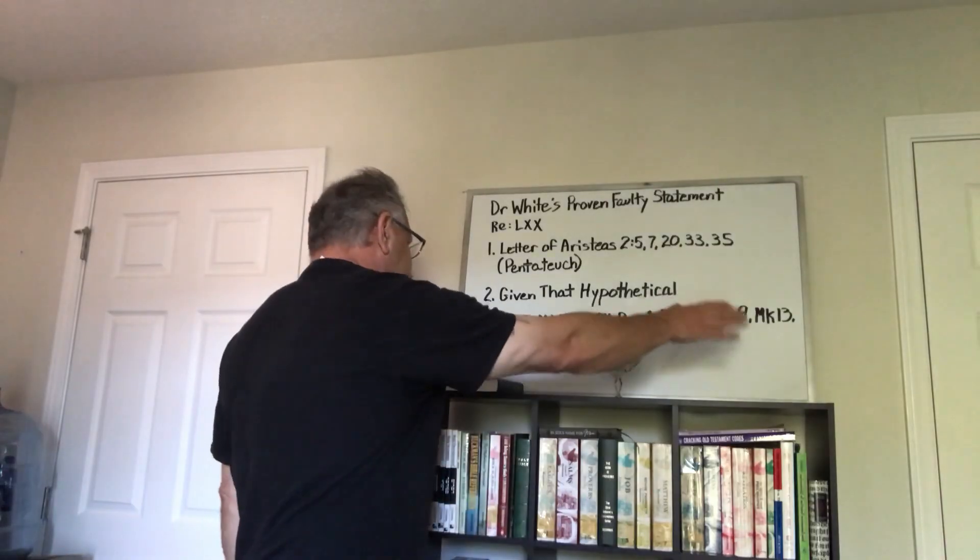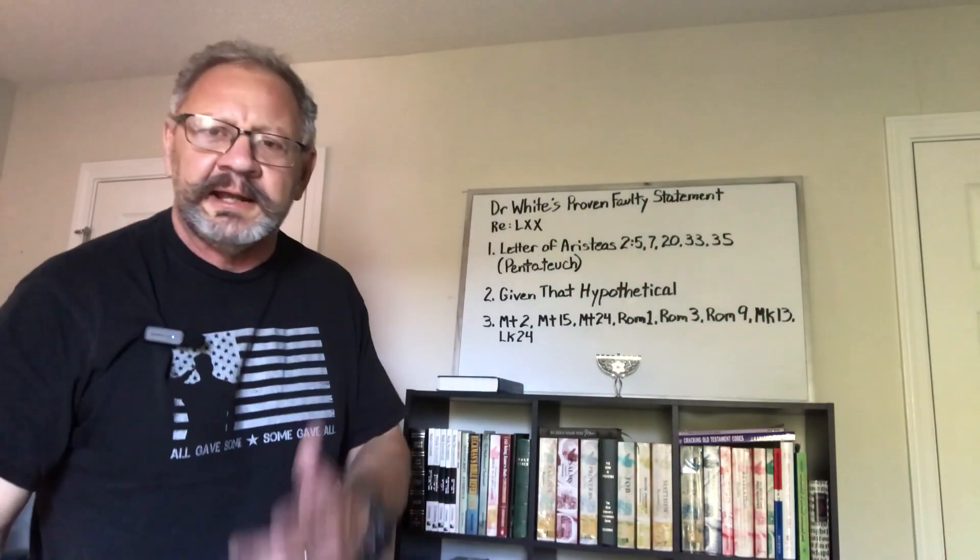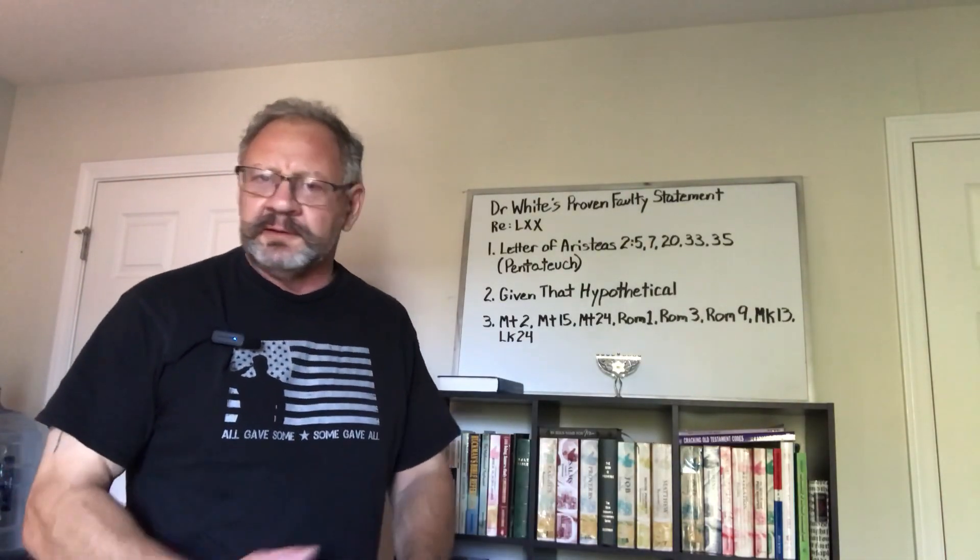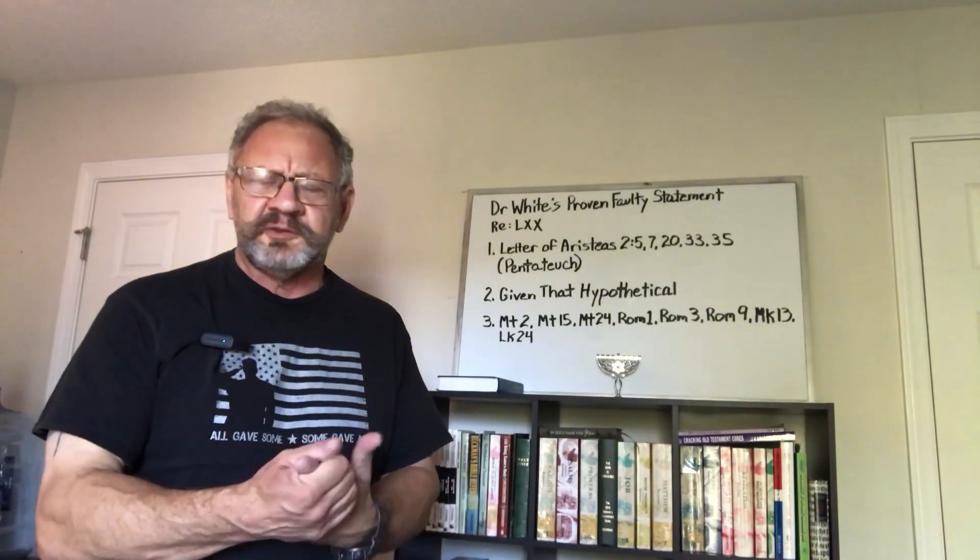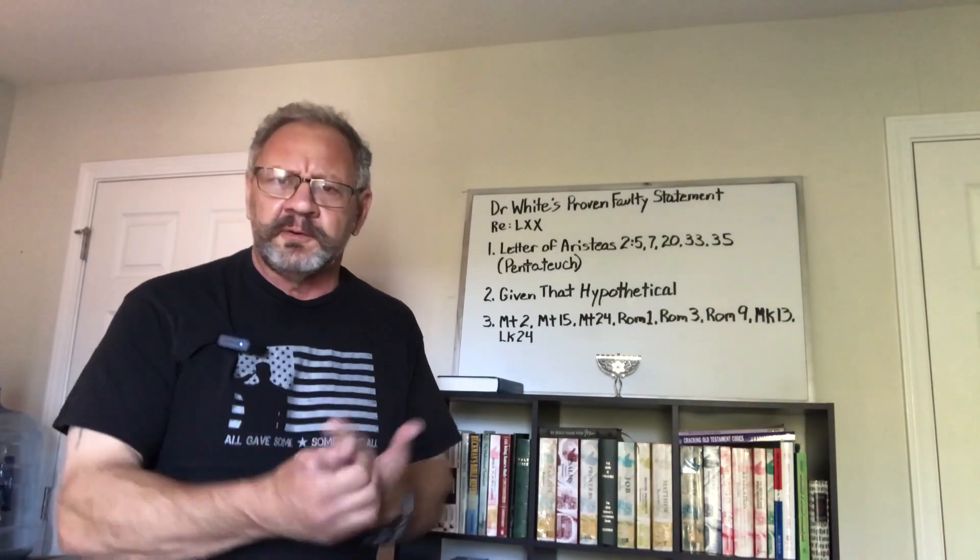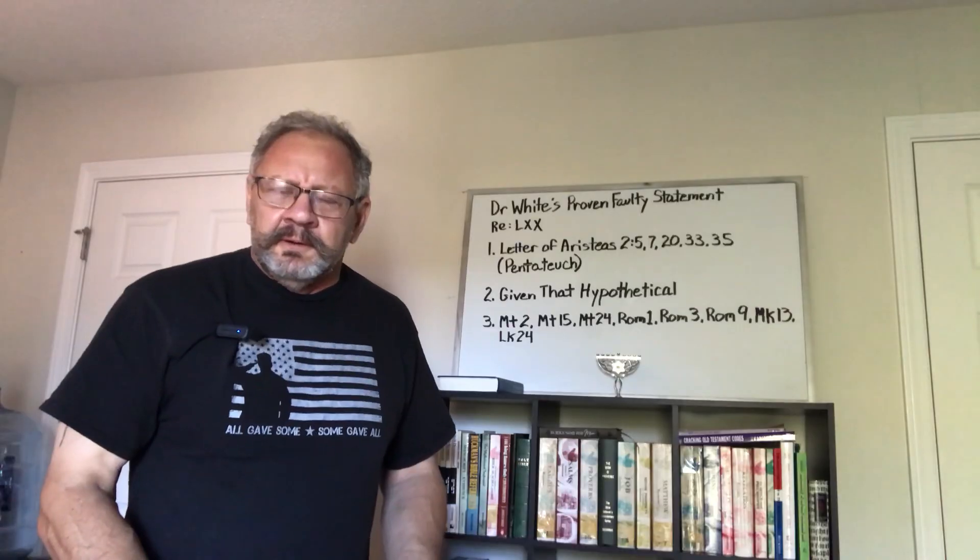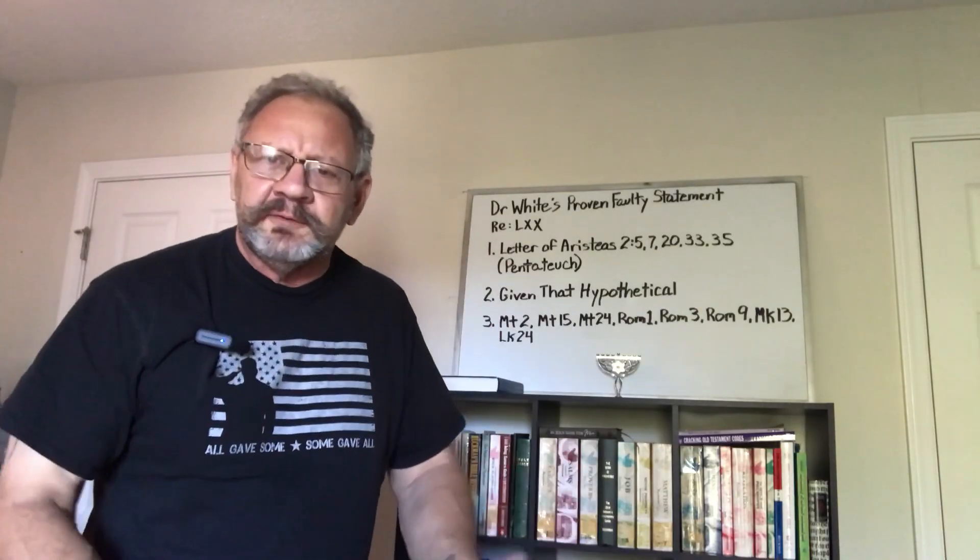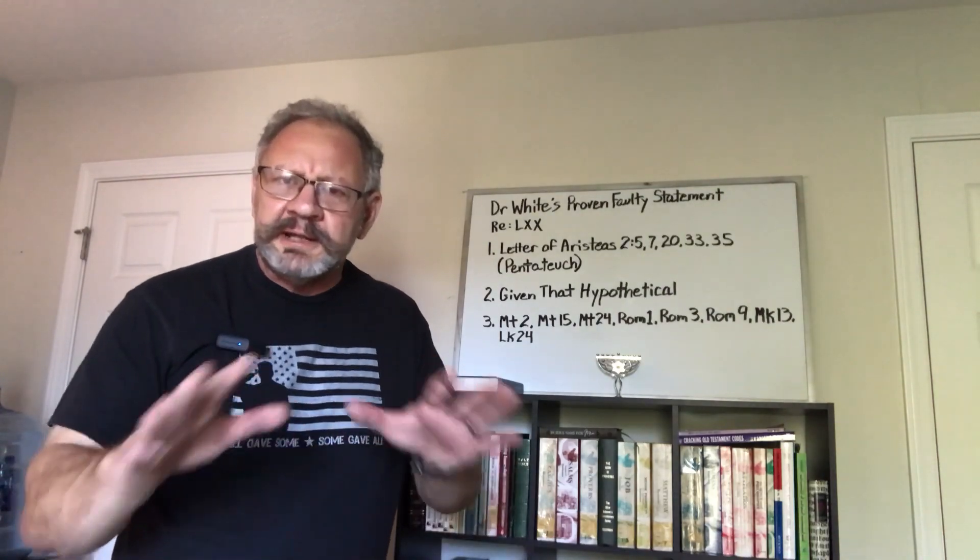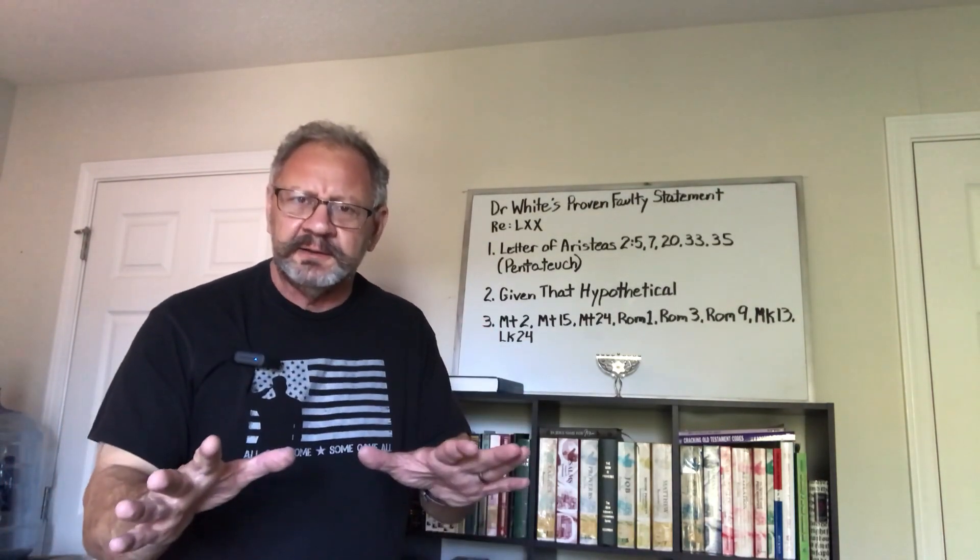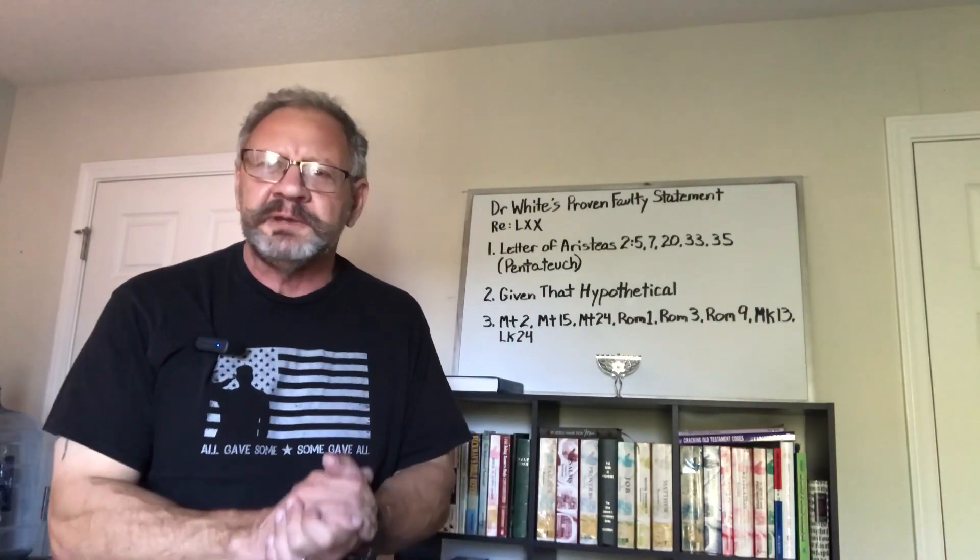And so there's scores of other places where you have citations and quotations out of the Prophets and out of the Writings. All of the times that Isaiah is quoted by Yeshua's apostles, all the times that Ezekiel is quoted, Jeremiah is quoted, all of the times that any of the other prophets are quoted, all of the time that any of the Writings are quoted, in particular the Psalms, could not have possibly been cited from a Greek Septuagint. It simply could not be so.